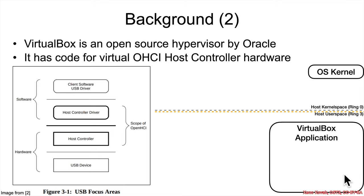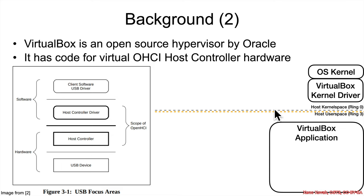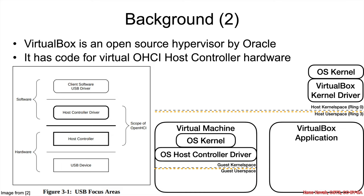We've got our privilege separation boundary, as usual. We've got a VirtualBox application — that's what you, the human, typically interact with — so that's an app that runs in user space. There's also going to be some sort of kernel space driver that allows this application to manage the virtual machine so that the VM thinks it's running directly on real hardware, but sometimes that's shuttled through to kernel space, and other times — as in the case of this vulnerability — it's shuttled through to user space.